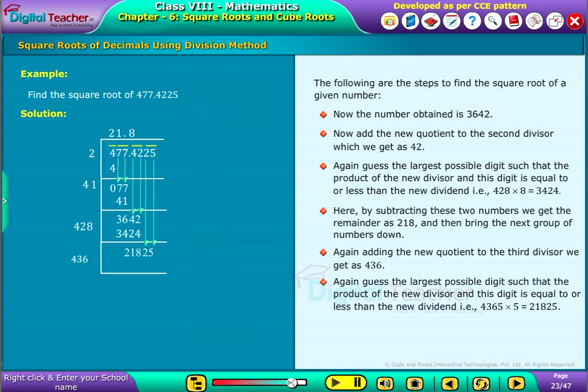Again, guess the largest possible digit such that the product of the new divisor and this digit is equal to or less than the new dividend. That is, 4365 into 5 is equal to 21825.